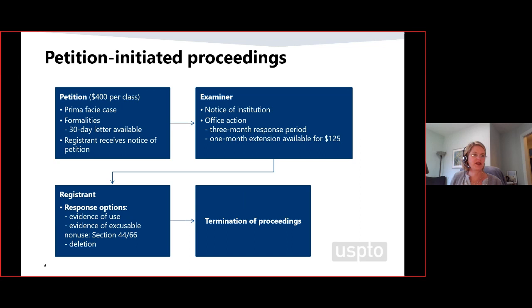The workflow for the petition-initiated proceeding goes like this. Once the petition is submitted and it's complete, the petitioner is out of the process — this is not an inter-partes case; it is now between the registrant and the USPTO. It is the director who decides whether the prima facie case is made based on evidence in the petition and the USPTO's electronic record of the involved registration. If a prima facie case is established, the director must institute proceedings. If a proceeding is instituted, the examiner will issue a notice of institution and an office action in the same document, directing the registrant to respond within three months with proof of use.